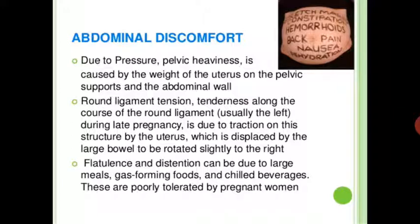Abdominal discomfort: pelvic heaviness is caused by the weight of the uterus on the pelvic supports and the abdominal wall. Round ligament tension and tenderness along the course of the round ligament during late pregnancy is due to traction on the structure by the uterus, which is deeply displaced as the lower large bowel rotates slightly to the right. Flatulence and distension can be due to large meals, gas-forming food, and chilled beverages, which are poorly tolerated by pregnant women.